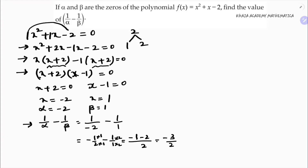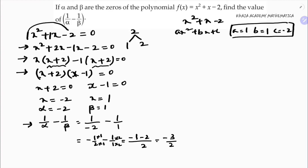Now we can simplify using another method. For x squared plus x minus 2, comparing with the standard form ax squared plus bx plus c, we get a equals 1, b equals 1, and c equals minus 2. Now I need to calculate 1 by alpha minus 1 by beta.